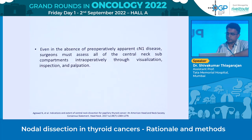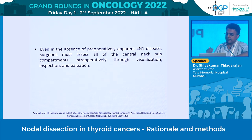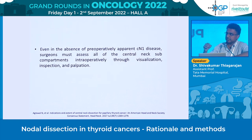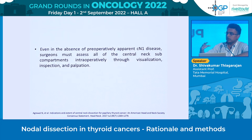This case was a clinically and radiologically N-positive neck. Even in the absence of pre-operatively apparent N1 disease, surgeons must assess all central compartment areas intraoperatively through visualization, inspection, and palpation. If any suspicious node is seen, it can be sampled and sent for frozen section — if positive, a formal central compartment dissection should be performed.